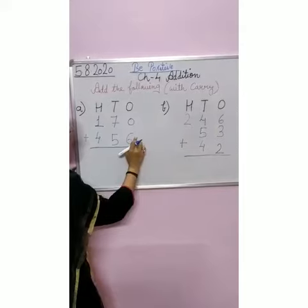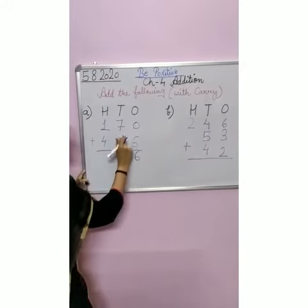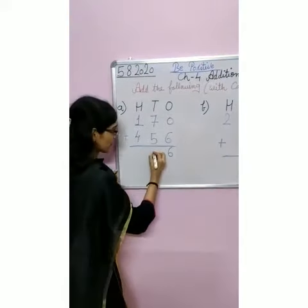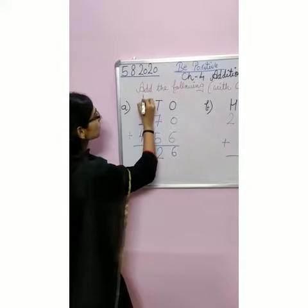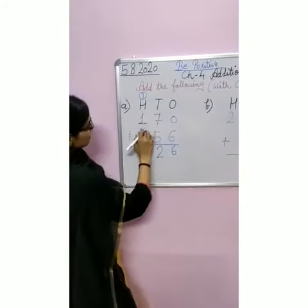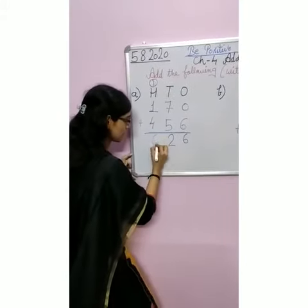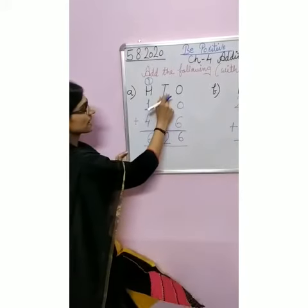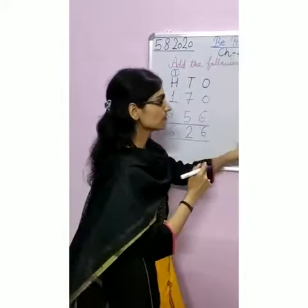Let's start. 0 plus 6 equals 6. 7 plus 5 equals 12. You can do that in your mind also, or on your fingers, whatever you prefer. 1 plus 4 equals 5, and with 1, that's 6. This means from the 10s place we have taken our carry to the 100s place.